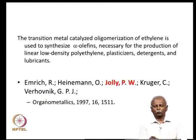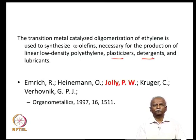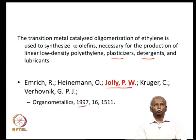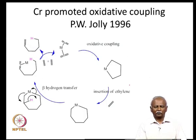The synthesis of alpha-olefins — where the double bond is present at the alpha carbon — is very important for the production of a variety of materials used in bulk quantities in industry, including low-density polyethylene, plasticizers, and detergents. It was only recently, in 1997, that a very clean catalyst was discovered by Jolly, who found that chromium is a suitable metal for carrying out oxidative coupling of three ethylenes to produce hexene.